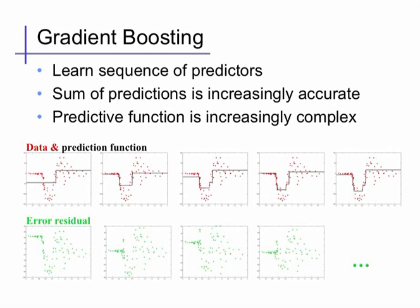Again, computing its error residual, we get this green function down here. Fitting it to a single-layer decision tree regressor, we get another function. Adding it in, we get a slightly more complex shape.